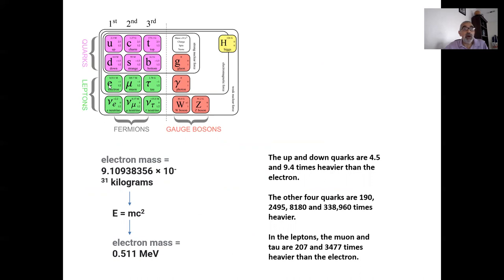These particles have properties. One of the properties they have is electric charge, which we've already talked about: positive two-thirds for the up quark, and for the charm quark and top quark; negative one-third for the down quark, strange quark, and bottom quark. For the electron, the charge is negative one; for the neutrino, it's zero.